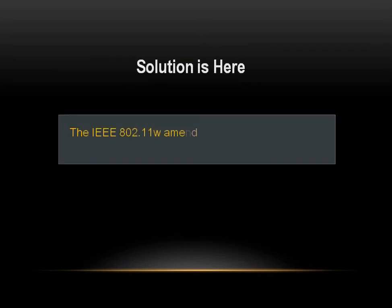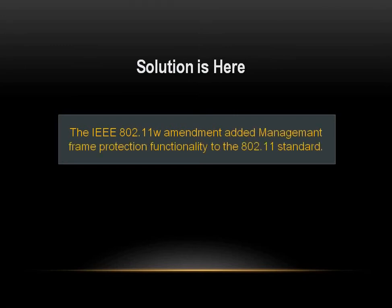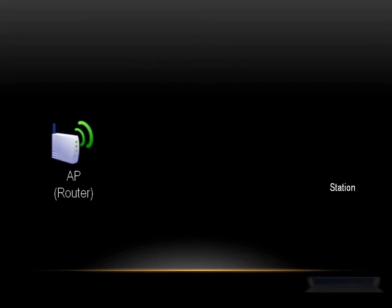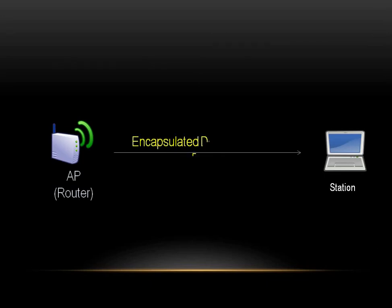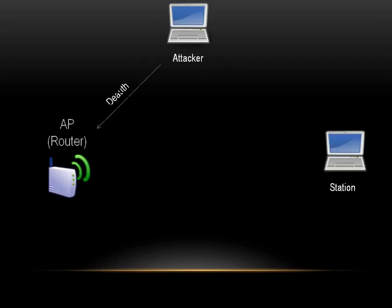So now what to do? Unlike data traffic, which can be encrypted to provide a level of confidentiality, management frames must be heard and understood by all clients and therefore must be transmitted as open or unencrypted. However, the IEEE 802.11w amendment added management frame protection functionality to the 802.11 standard. When the 802.11w standard is implemented in the wireless medium, client protection is added by the AP applying cryptographic protection to de-authentication and disassociation frames, preventing them from being spoofed in a DoS attack. If an attacker is sending unencrypted de-authentication frames to an AP or station, the AP and stations would not accept the de-authentication frame.